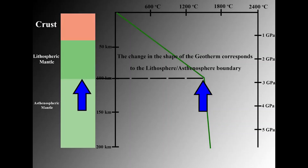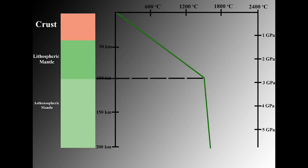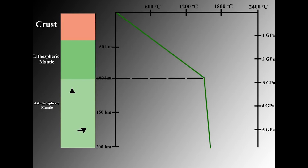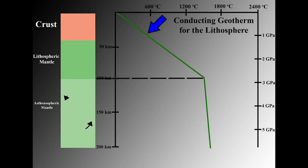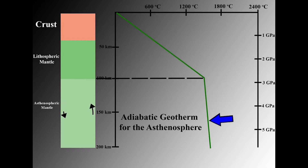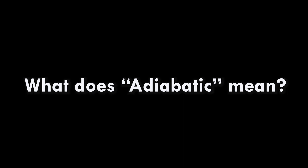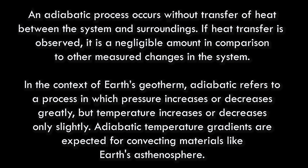Notice how the geotherm slope abruptly changes at the lithosphere-asthenosphere boundary. Since heat is transferred by conduction in the lithosphere, there will be widely varying temperatures. Heat is well distributed via convection in the asthenosphere, leading to nearly constant temperatures with increasing depth. The geotherm in the lithosphere is said to be conductive, while the asthenosphere's geotherm is adiabatic. In thermodynamics, an adiabatic process is one that occurs without transfer of heat between the system and its surroundings.